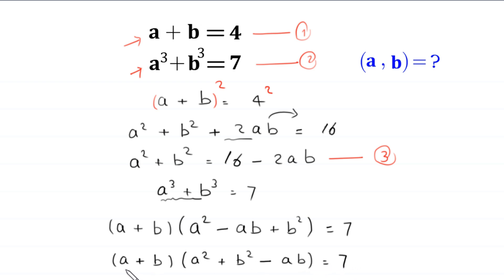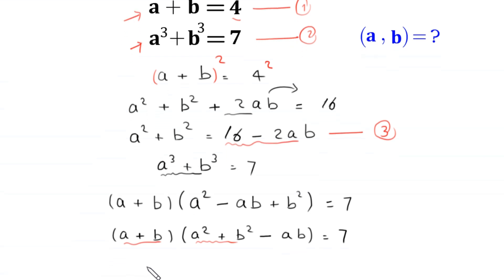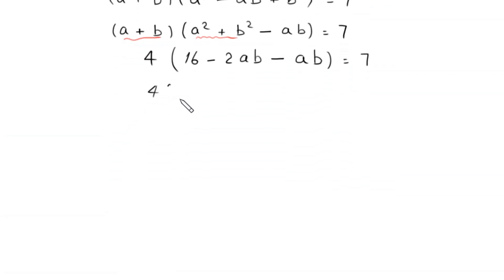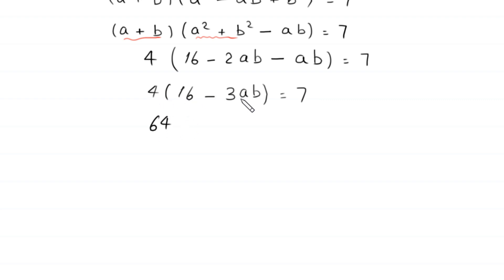Now, in this equation we replace a plus b with the value 4, and we replace a squared plus b squared with the value 16 minus 2ab from equation 3. So this will become 4 times (16 minus 2ab minus ab) is equal to 7. Next, 4 times (16 minus 3ab) is equal to 7.